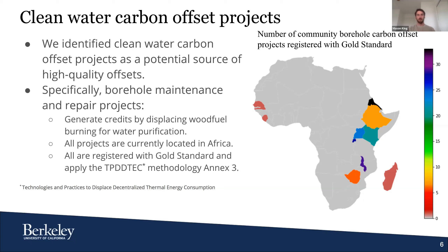The map to the right is color-coded to correspond to the density of community borehole projects per country. For example, Eritrea has 33 projects currently registered and issuing credits, whereas Sierra Leone and Senegal in West Africa each have one project which were added just this past year and have yet to issue any credits.